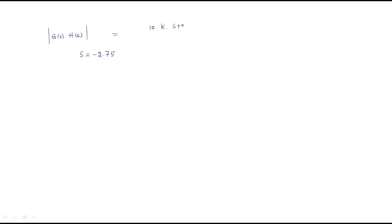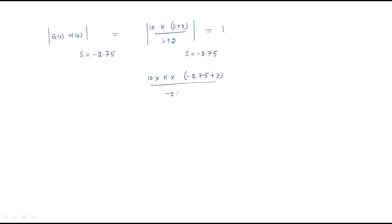Substituting s equals minus 2.75, we evaluate the magnitude of 10K(s+3) divided by s(s+2). Solving this, we find the magnitude equals 1, and the value of K is approximately equal to 0.3.